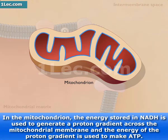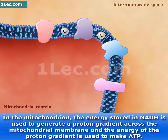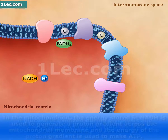In the mitochondrion, the energy stored in NADH is used to generate a proton gradient across the mitochondrial membrane, and the energy of the proton gradient is used to make ATP.